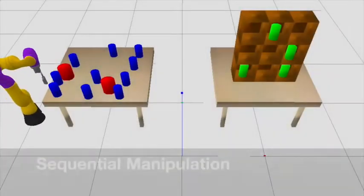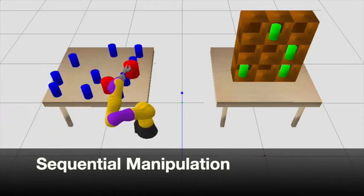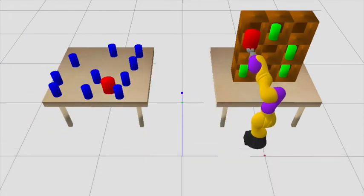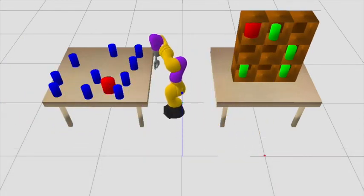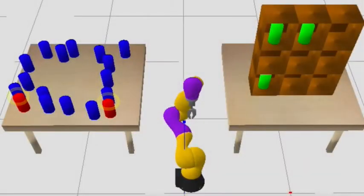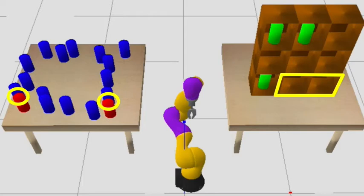Or consider this sequential manipulation domain where the robot must move the red objects into the bins on the right. If the agent imposes a constraint that allows only top grasps and forbids placing objects in already occupied bins, it must only consider plans that obey this constraint.